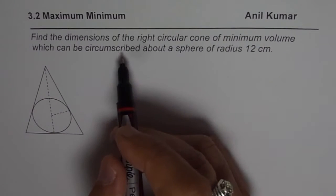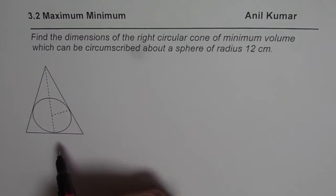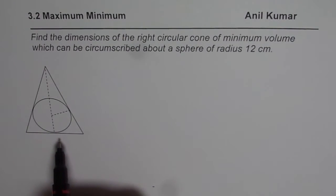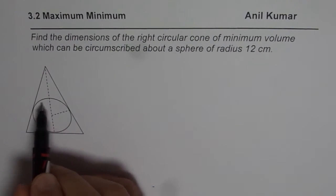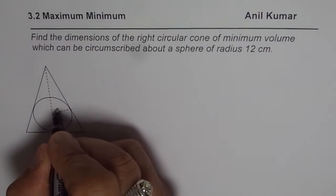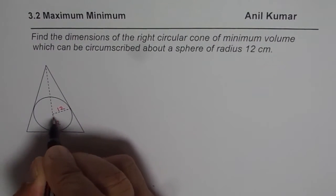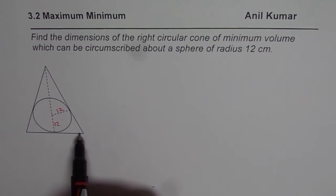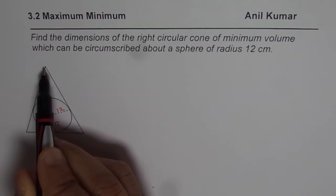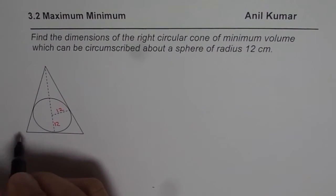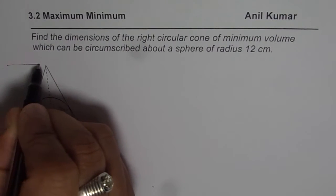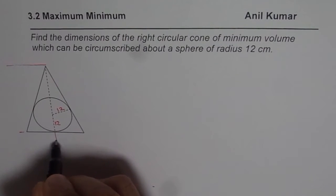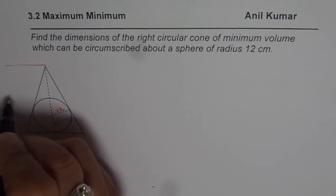Circumscribed means the cone comes over the sphere. We have a cross section where the sphere of radius 12 cm is shown. The cross section of the cone will be a triangle. We need to find the dimensions of this triangle with minimum volume — that means finding the height of the cone and the radius of the cone base.